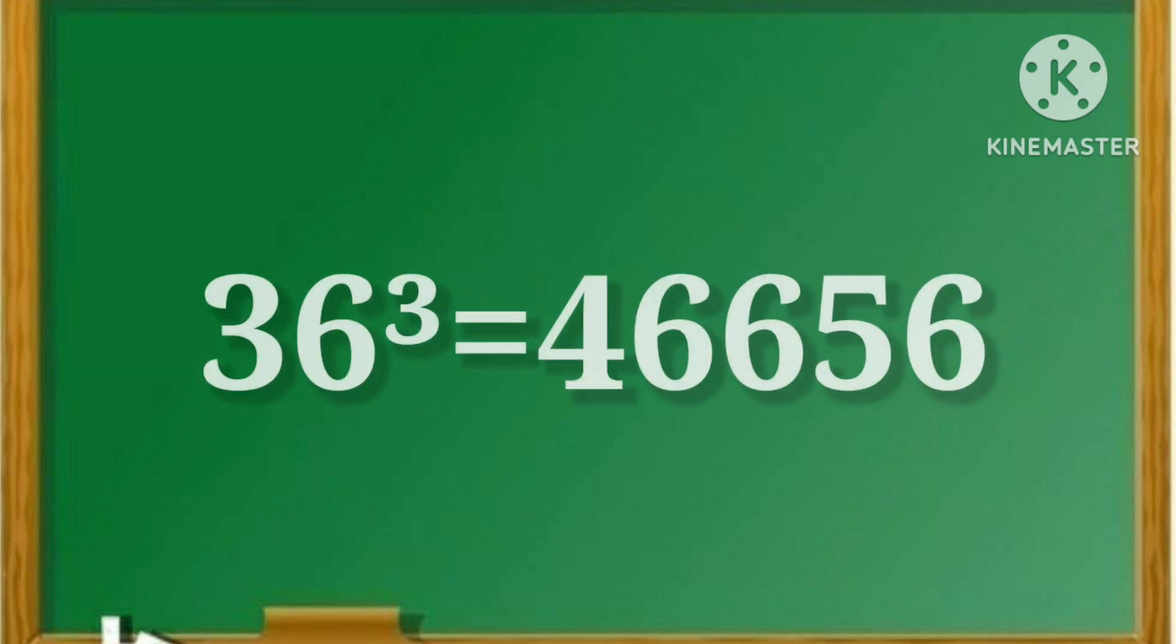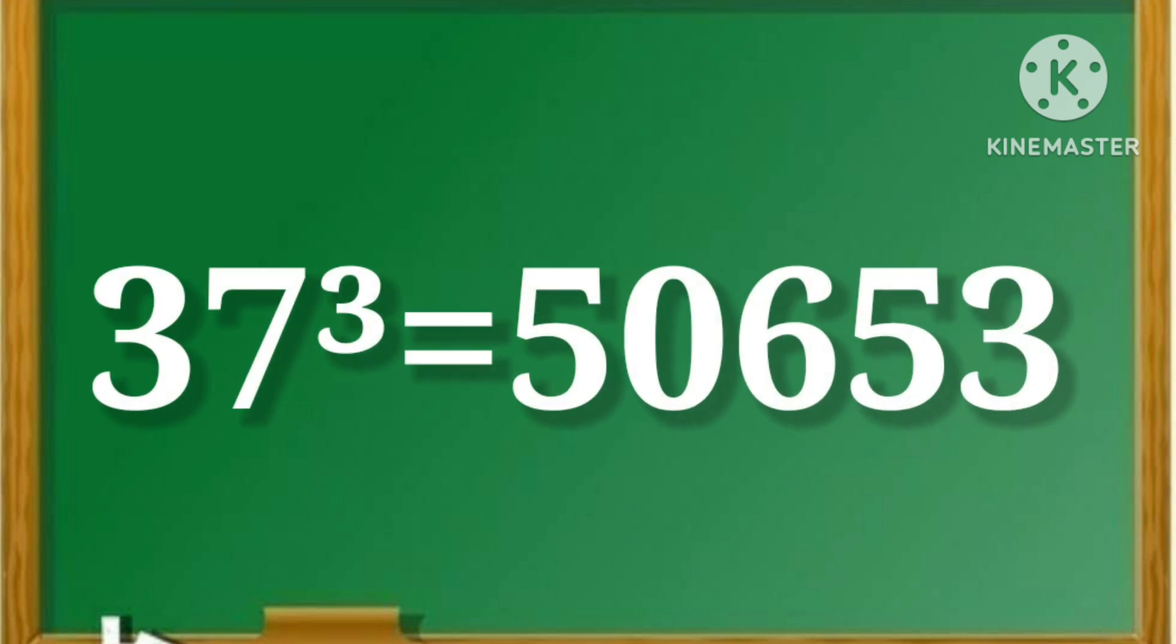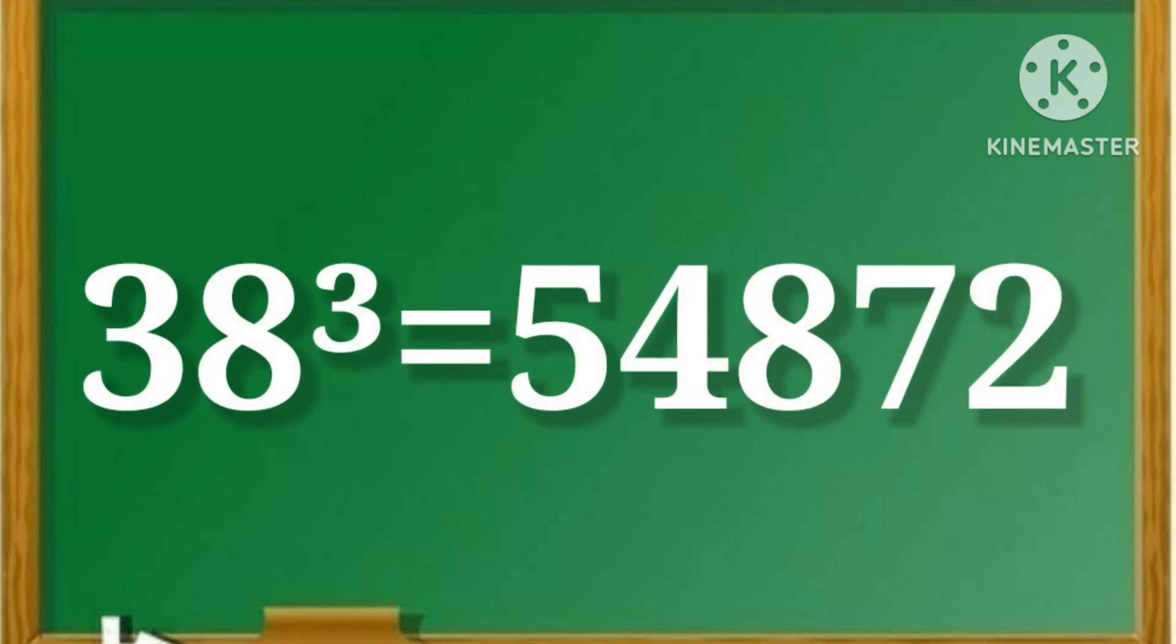36 cube is equal to 46,656. 37 cube is equal to 50,653. 38 cube is equal to 54,872.